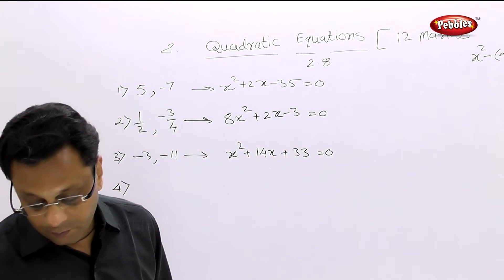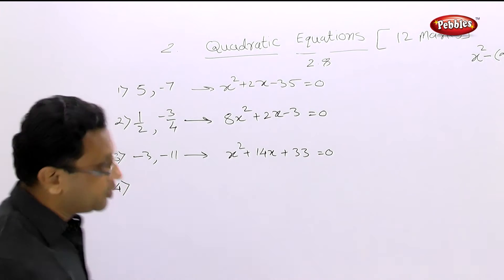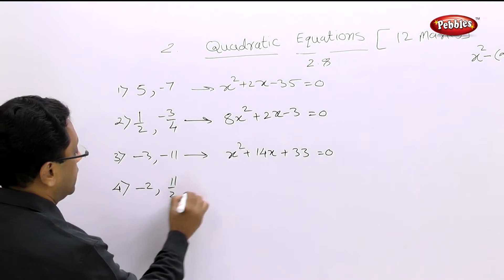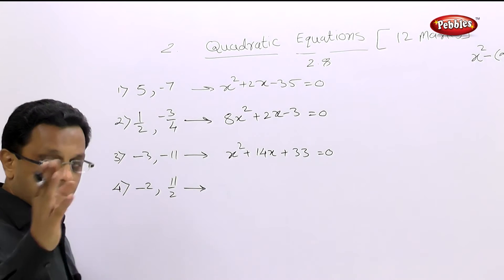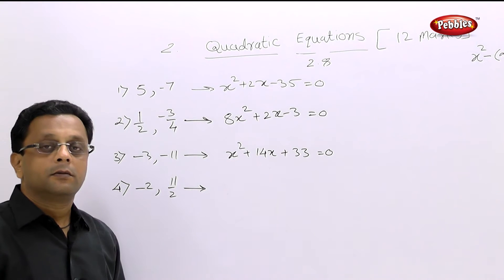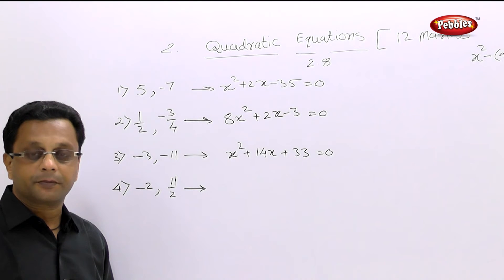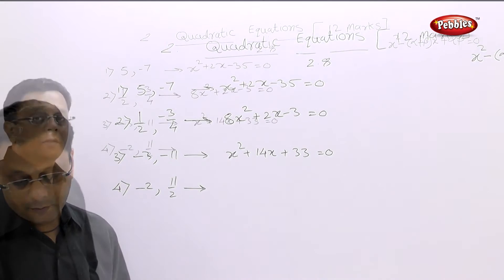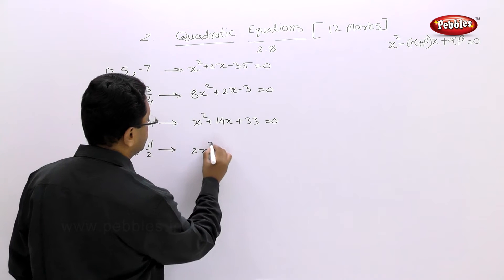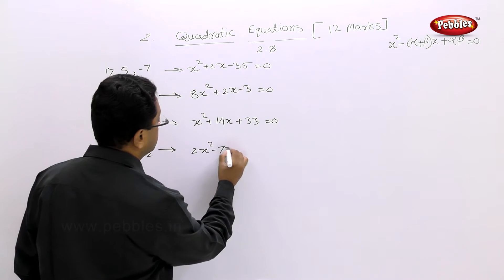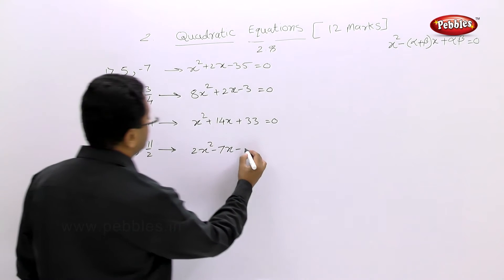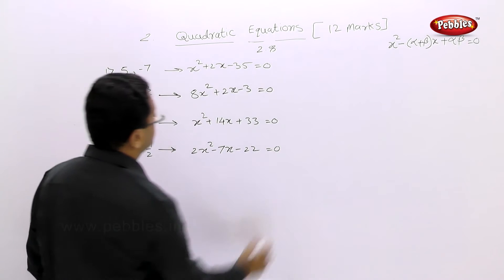The fourth example: roots are minus 2 and 11 by 2. Pause your video and solve this. The answer is 2x squared minus 7x minus 22 equal to 0.